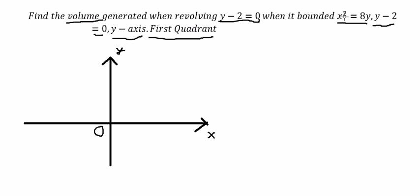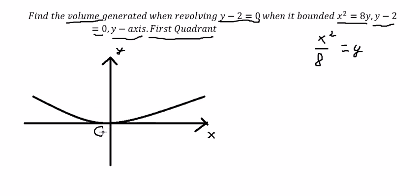We have x squared equal to 8y, so we get x squared divided by 8 equal to y — that's the curve. And y minus 2 equal to 0 means y equal to 2, which is a horizontal line. We know this region is in the first quadrant along the y-axis.